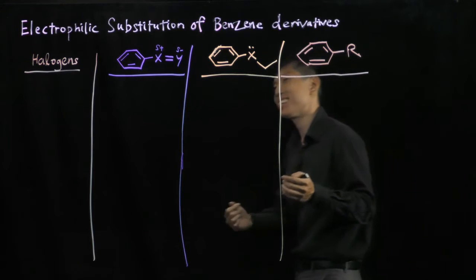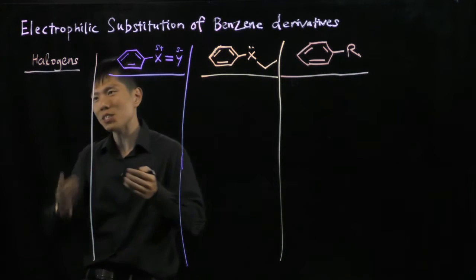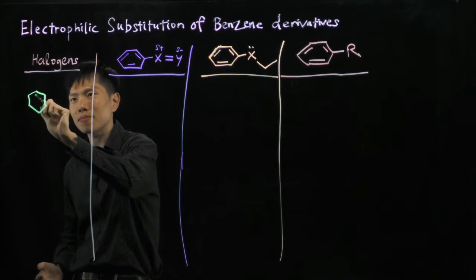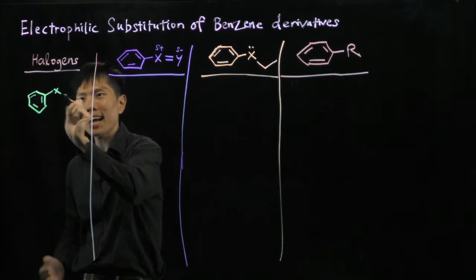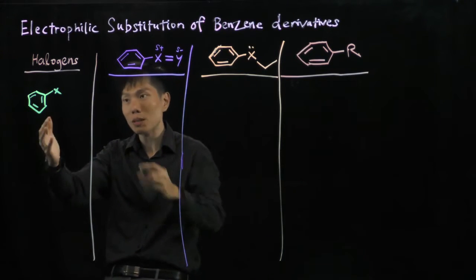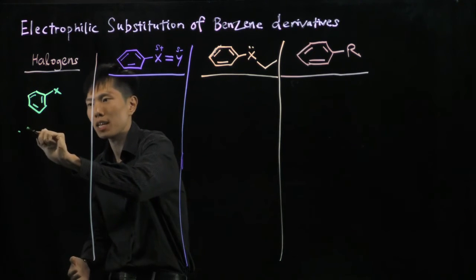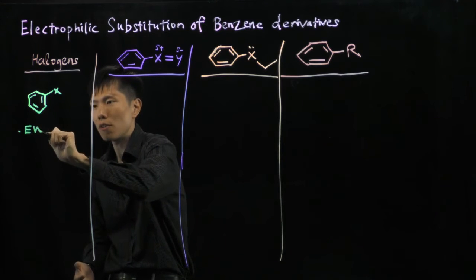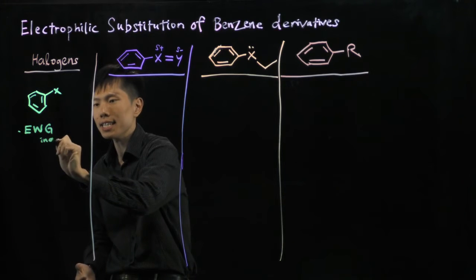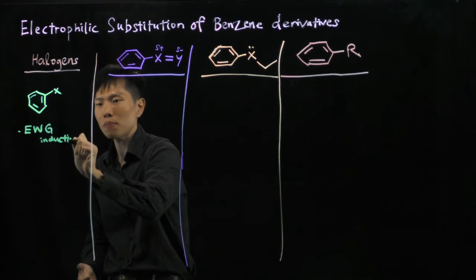Let's take a look at the halogen series first. I'm just talking about a halobenzene. X here represents the halogen. We know the halogens are electronegative so they pull electrons. So they are electron withdrawing groups by inductive effect, just based on the electronegativity nature.